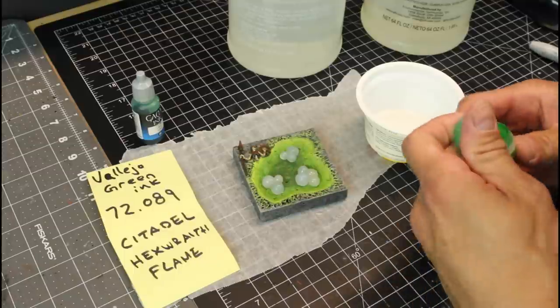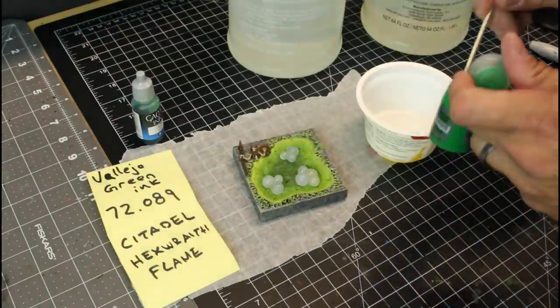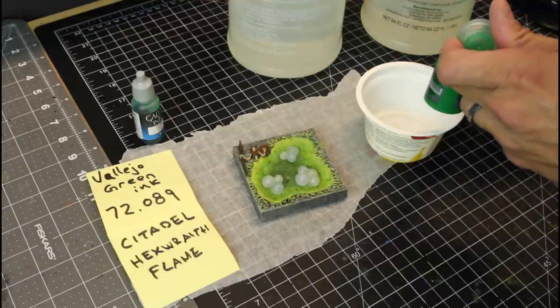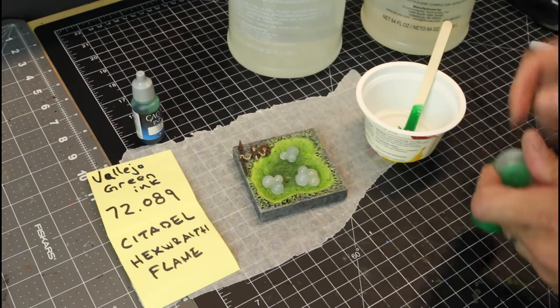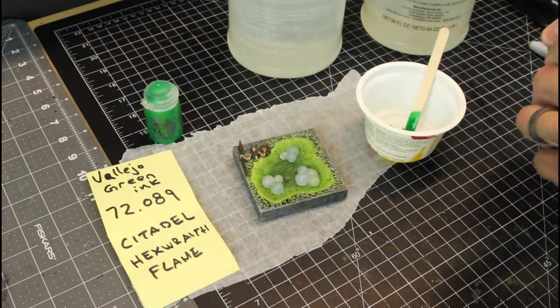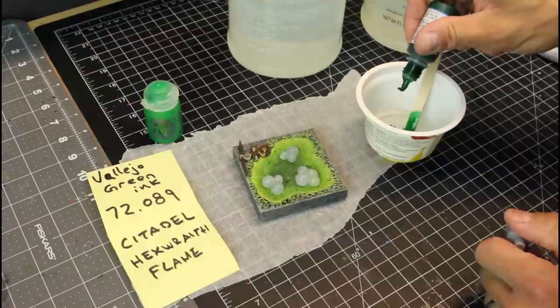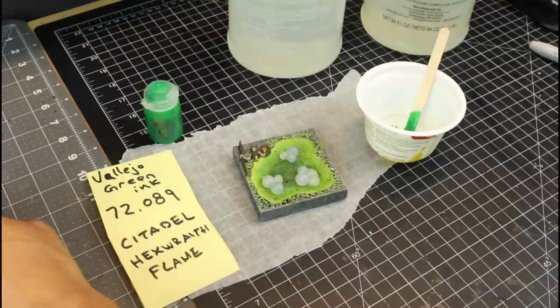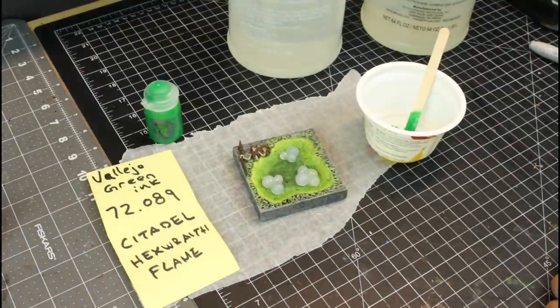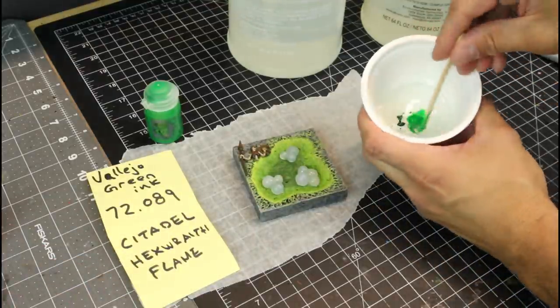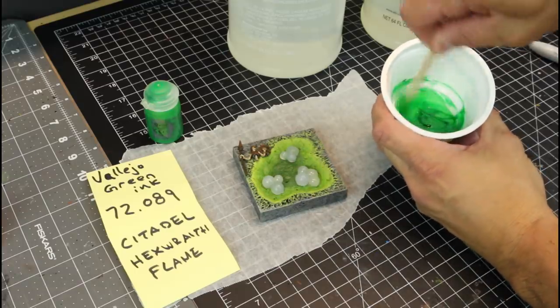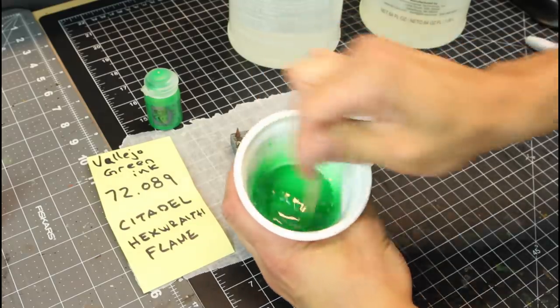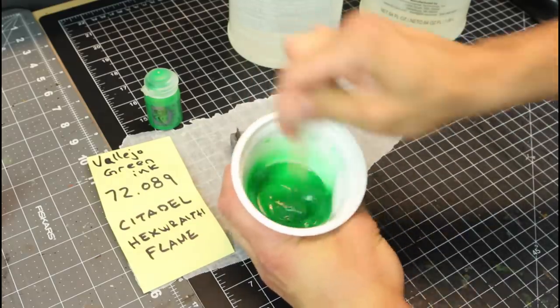All right, so I've already added my two-part resin in here. And I'm adding some of this Hex Wraith Flame. We're going to add some of that and a little green Vallejo ink. And we're going to mix this up. Now you're going to see a major no-no when it comes to mixing resin. But I did it on purpose. I'm going to mix this very vigorously because I wanted to have a lot of air pockets, a lot of air bubbles in this resin so that it looked kind of almost frothy a little bit once it cured.